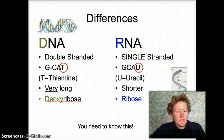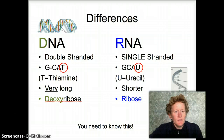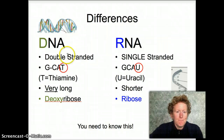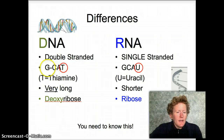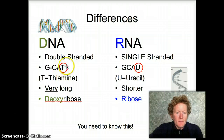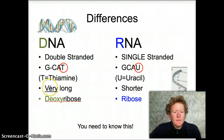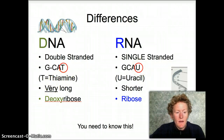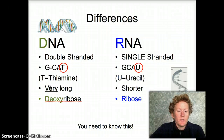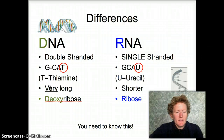DNA is double stranded. It's got two parts to it, two sides, like a ladder. It's got the bases guanine, cytosine, adenine, and thymine, which is different from RNA, which has uracil. DNA is really, really long — one piece of DNA is about three meters. That's longer than your couch, and it's packed up very tightly to fit in the nucleus of your cells.